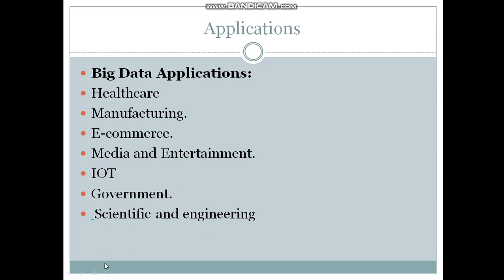These are the different applications where big data is used. The sectors where big data applications can be used include: healthcare, manufacturing, e-commerce, media and entertainment, IoT, government, and scientific and engineering. In the healthcare department, health records are stored and health data is managed using big data applications. We can also predict any disease data using big data applications. In manufacturing, we can estimate the cost of products and manage manufacturing details using big data applications. In e-commerce, almost all data is managed using big data.